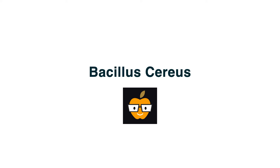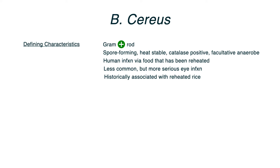Bacillus cereus is the next pathogen in my microbiology series. Not a whole lot to know here, so let's just power through. This is a gram-positive rod. It's spore-forming, it's heat-stable, it's catalase-positive, and it's a facultative anaerobe.